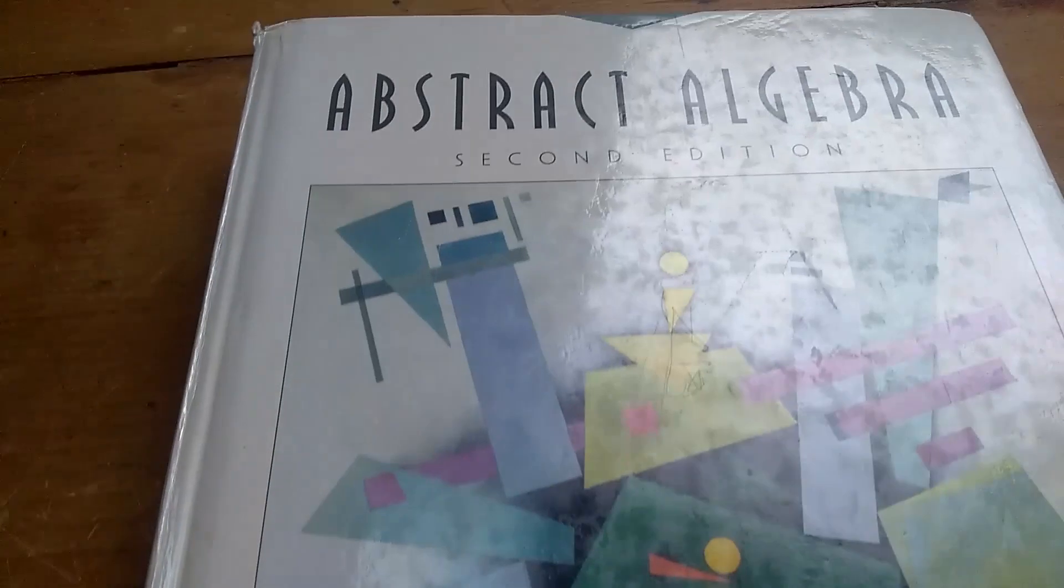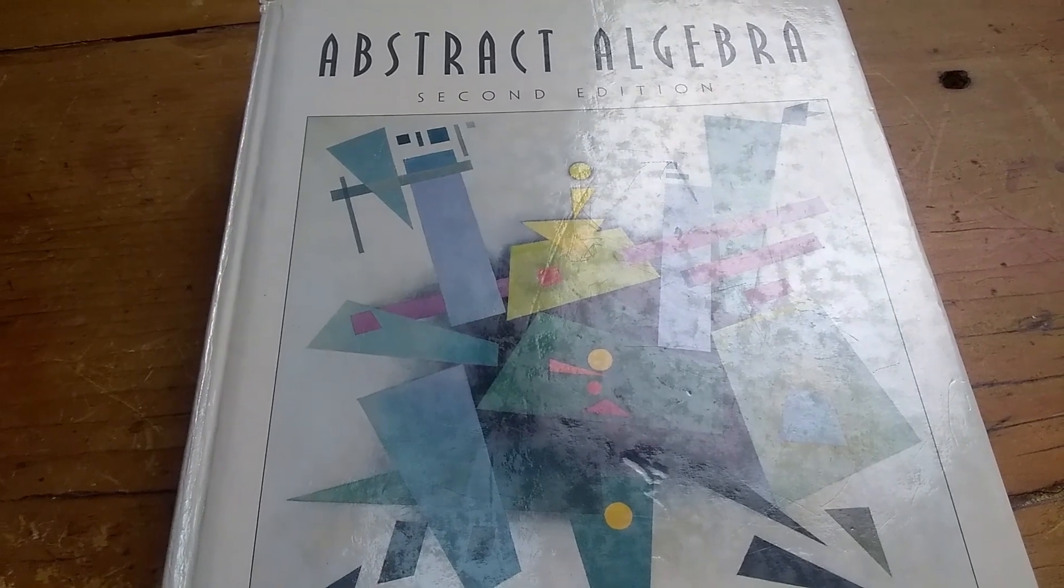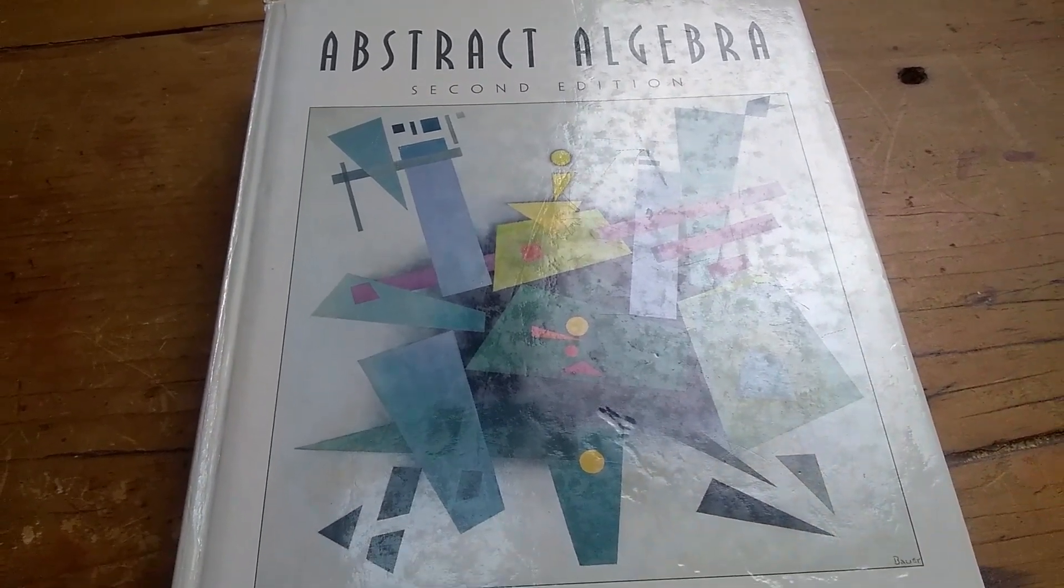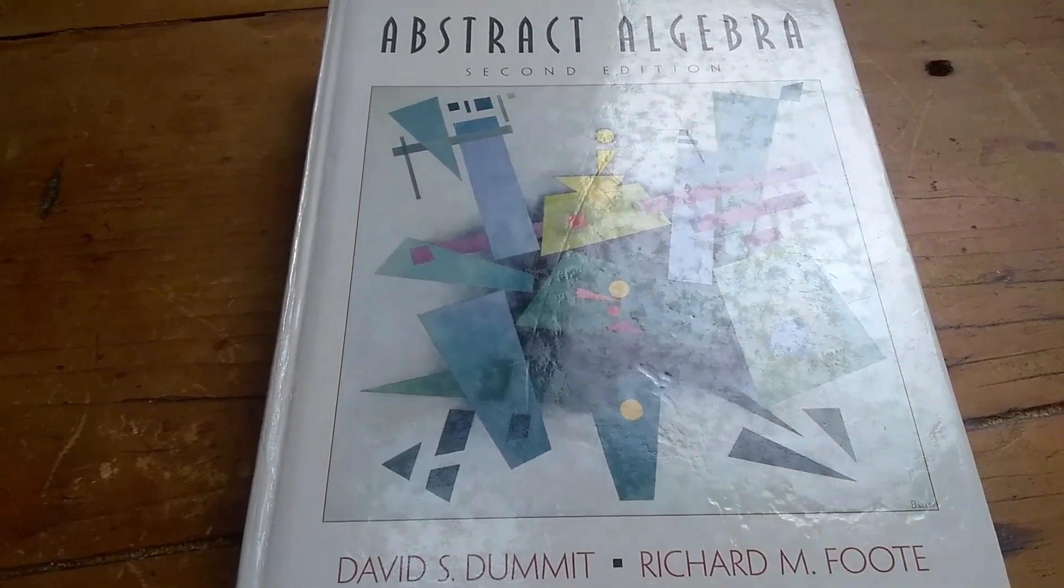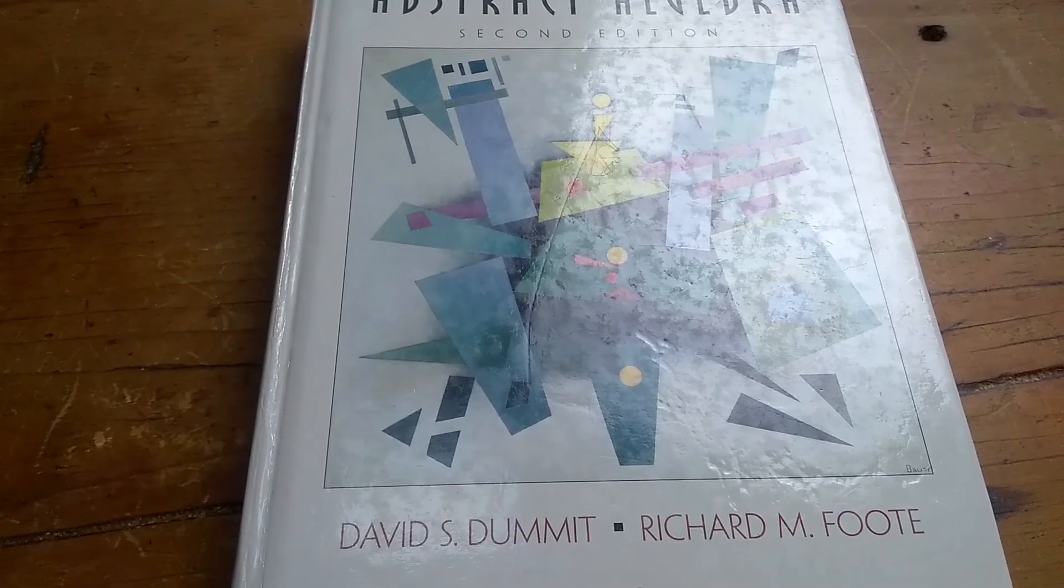So again, the book is Dummit and Foote, Abstract Algebra, right? An awesome book. Definitely worth owning if you're trying to learn abstract algebra. And even if you're just starting out, I still think it's a good book. You should get this one and then some beginner books as well. That's it.